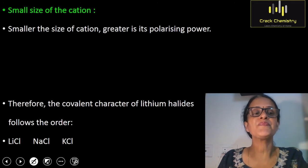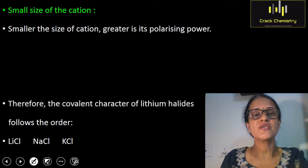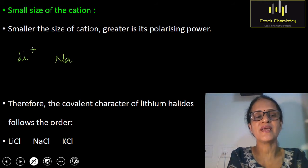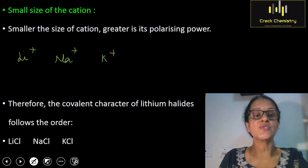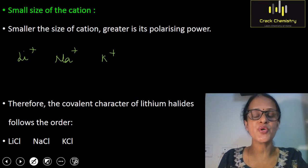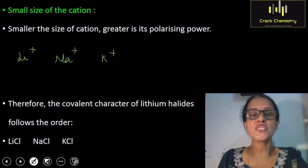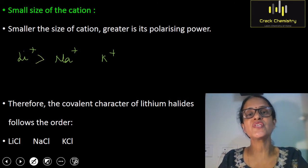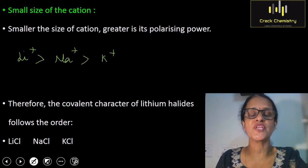Rule number 1 is the small size of cation. Always remember that a small size cation has greater polarizing power. Consider the cations Li+, Na+, and K+. All belong to Group 1 of the periodic table. Lithium ion has a smaller radius than sodium ion, and sodium ion has a smaller radius than potassium ion. So lithium ion will have more polarizing power than sodium ion, and sodium ion will have more polarizing power than potassium ion.